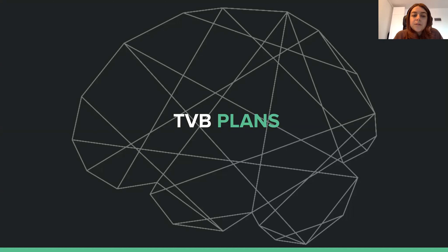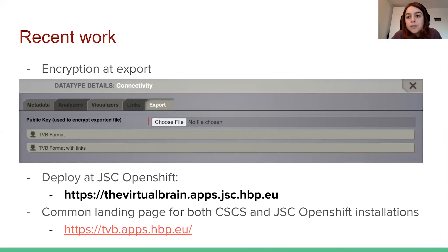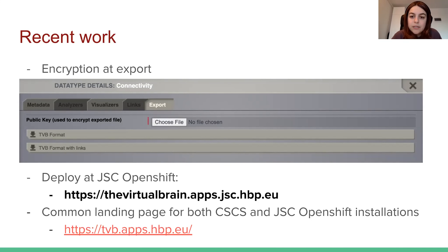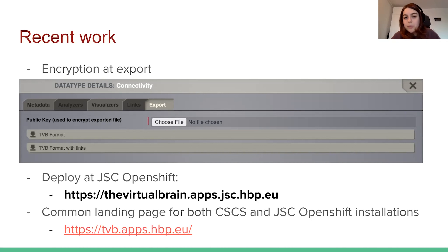Moving forward to recent work and future plans in this context: TVB GUI also has export features that allow users to download their data. In order to avoid plain data getting out of TVB, we have added an encryption mechanism to this part as well. The idea is that the user should generate a pair of public and private keys locally and then share the public key with TVB via the web interface before doing the actual export. TVB will then encrypt the requested data using the public key sent by the user and send back the encrypted version of that data.